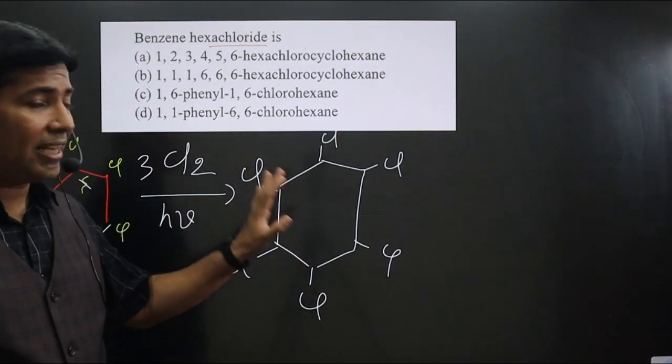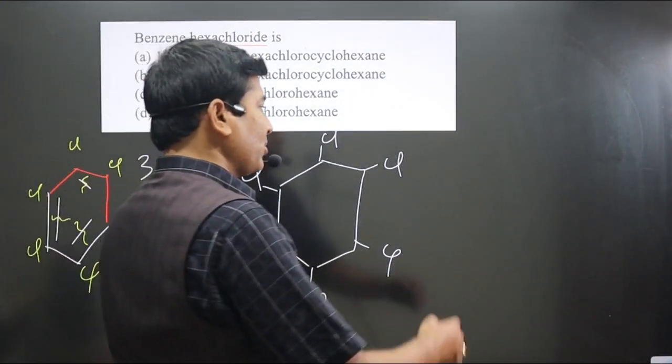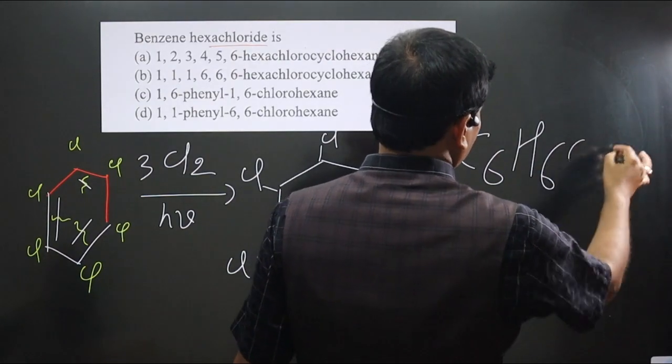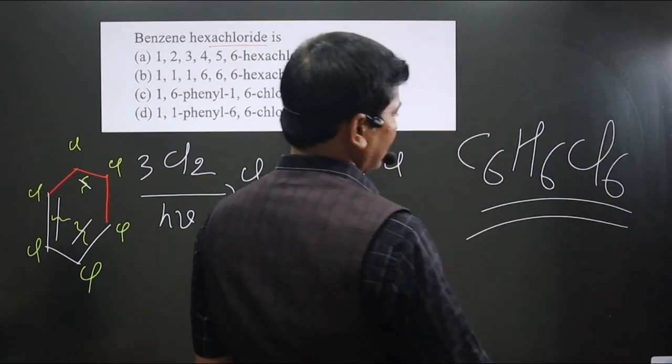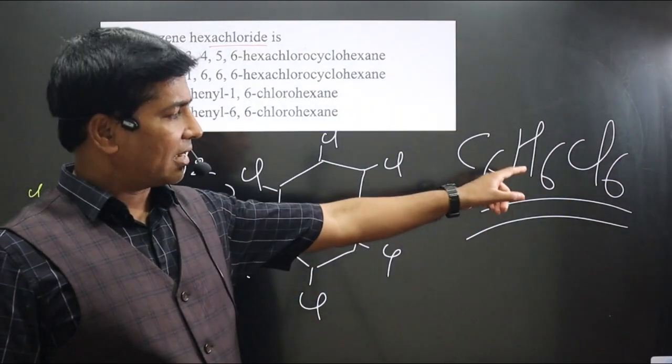Keep in mind each carbon is connected to one hydrogen and one Cl. Hence we have the chemical formula C6H6 and Cl6. This is the chemical formula we have - C6H6 and Cl6.